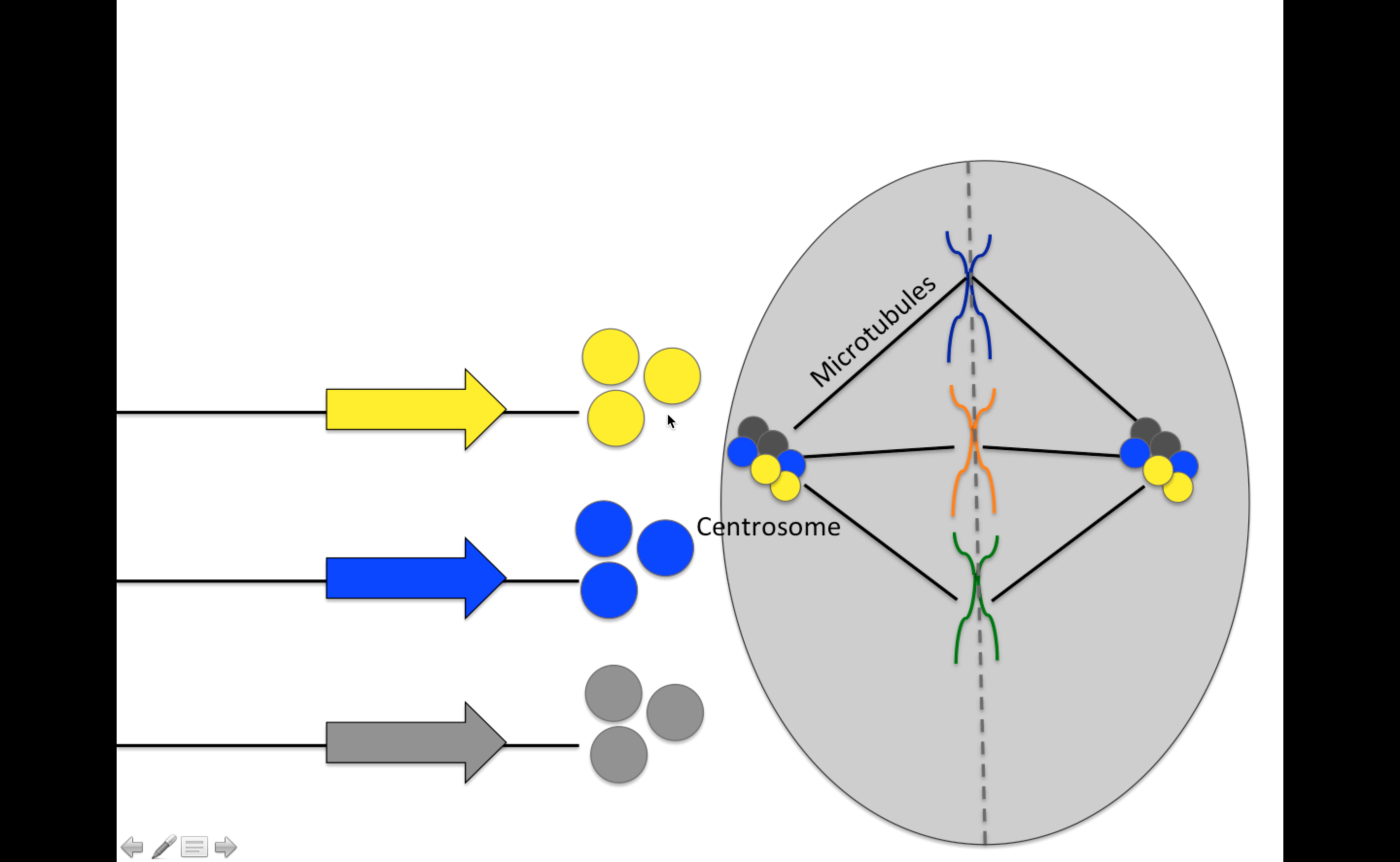And so one way that we can control mitosis and other processes in the cell cycle is to control these genes. So in order to form a centrosome, we need expression of the relevant proteins. I've just colored them three different genes with three different colors. And these genes need to be on.